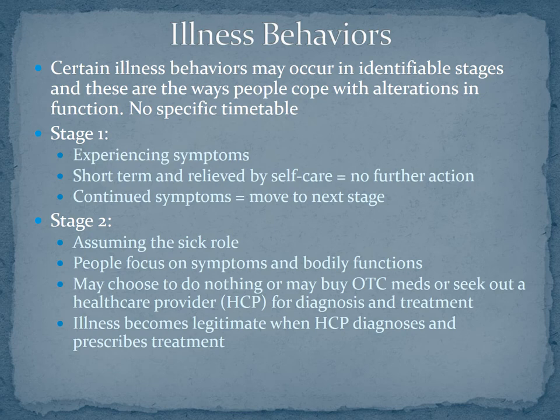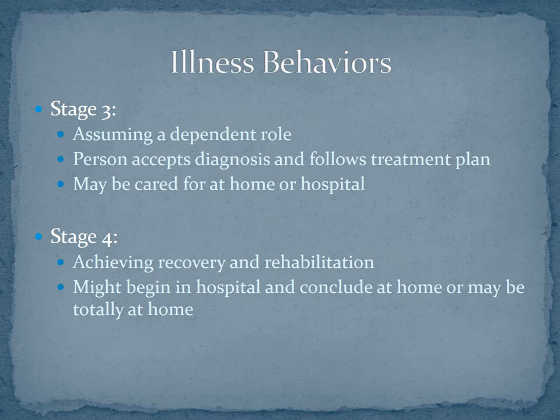In stage two, the person assumes the sick role and focuses on symptoms and bodily functions. You may choose to do nothing, take additional over-the-counter medications, or seek out a healthcare provider for a diagnosis and treatment. If you go to the doctor, your illness becomes legitimate when the provider diagnoses you and prescribes a treatment. Stage three is assuming a dependent role — the person accepts their diagnosis and follows a treatment plan. You may be cared for at home or in a hospital.